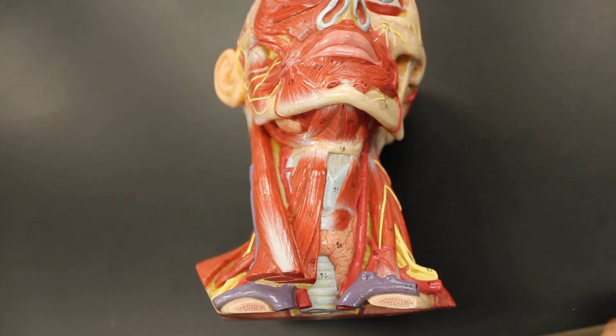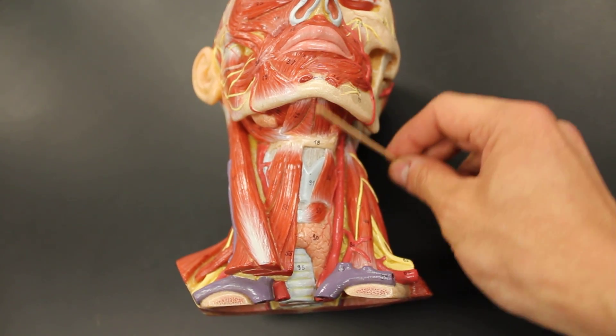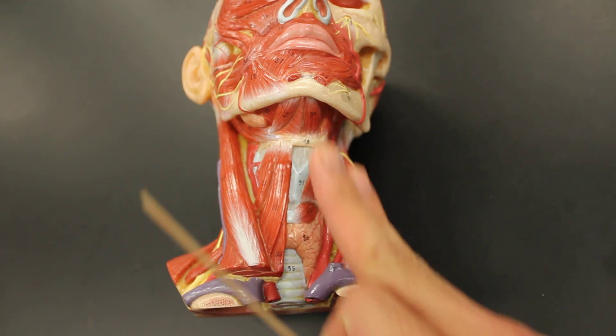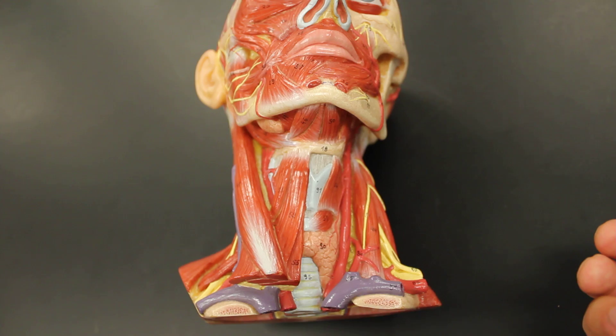Let's first start off with our superficial neck. One muscle that's actually missing is the platysma. It would be a very thin sheet-like muscle that kind of covers over all this stuff, even this muscle right here that's considered a superficial neck muscle.